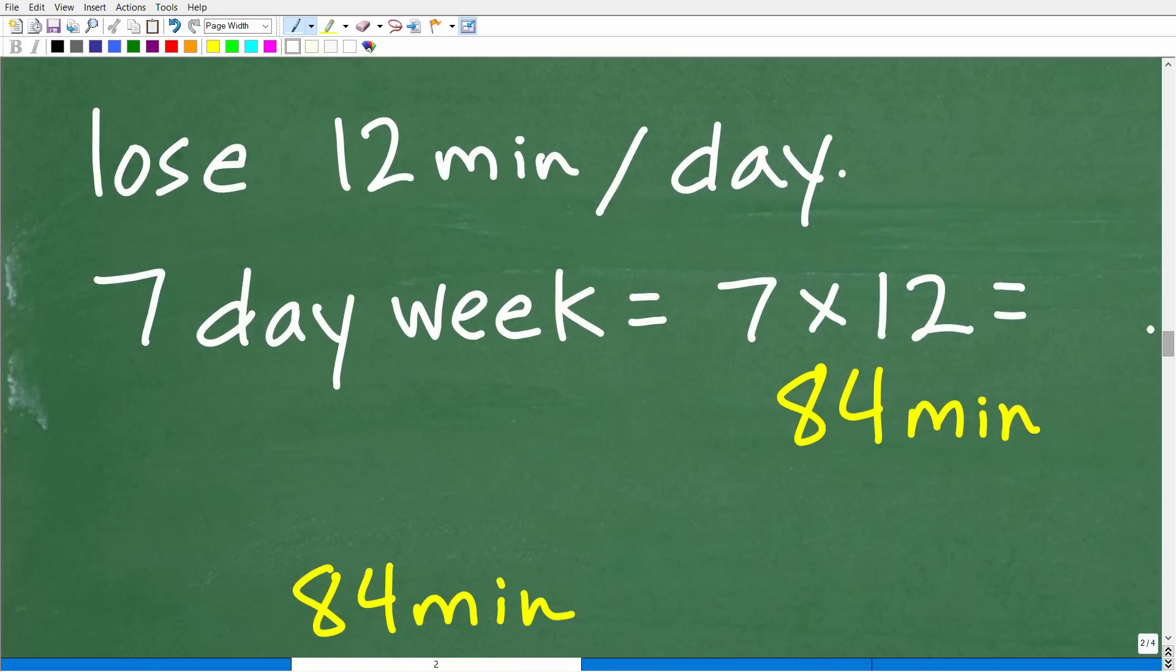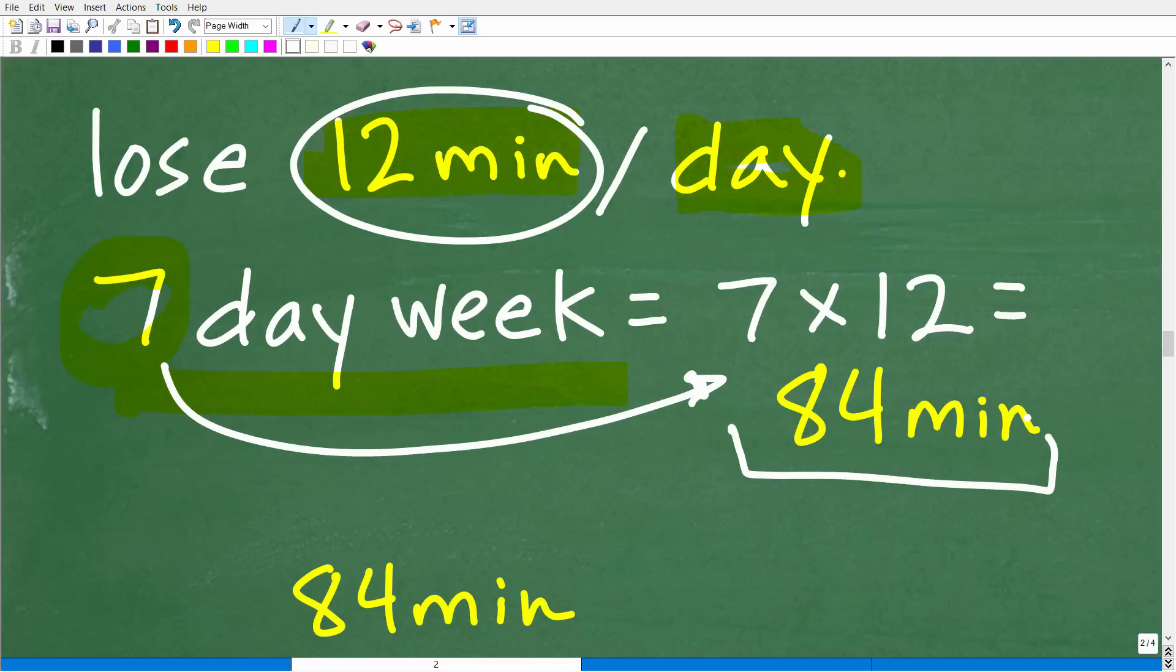Really not much to do now that we know that this clock is going to lose 12 minutes per day. And the question is, how much time or how many hours is this clock going to lose in a seven-day week? Well, all we have to do is take our daily rate, which is 12 minutes per day, and multiply by seven to get the total time in terms of a seven-day week this clock is going to lose. So this clock is going to lose 84 minutes.